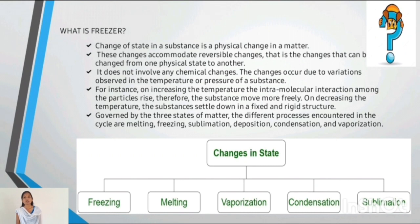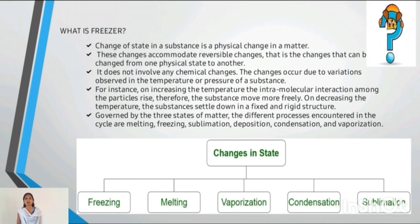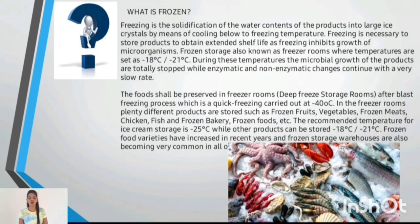A change in the state of a substance is a physical change in matter. This change encompasses reversible changes — that is, a change that can go from one physical state to another. It does not involve any chemical reaction; change is due to variation observed in the temperature or pressure of a substance. Governed by three stages in different processes, the cycles are melting, sublimation, deposition, condensation, and vaporization.